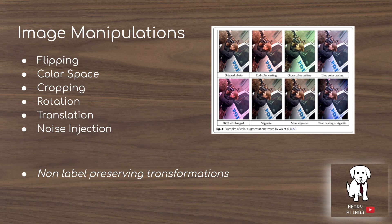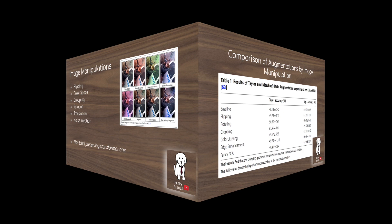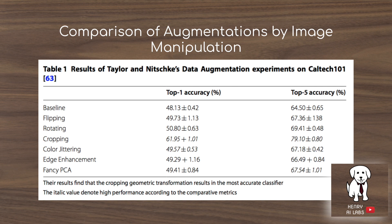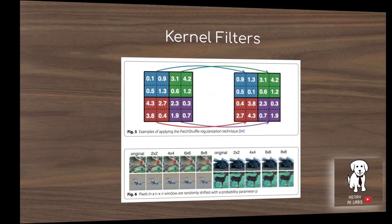One thing to consider with image manipulations is non-label-preserving transformations. For example, if you horizontally flip the MNIST dataset and flip a 9 horizontally, it's no longer really a 9. With all these image manipulations, they have an affiliated magnitude parameter, and there's always some level of distortion that can corrupt the label. Comparing augmentations by image manipulation, it's interesting to search over the augmentation space — in one study, cropping gave much better performance than other augmentations.